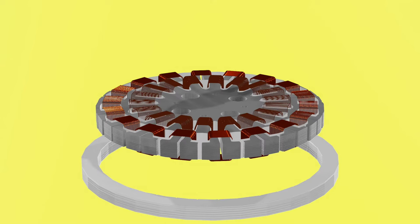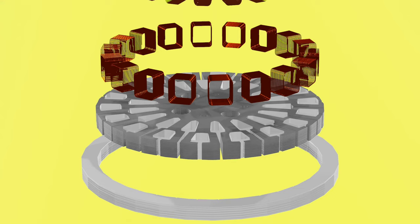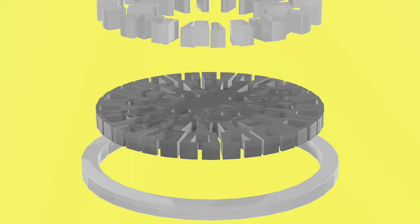On this stator core, there are two windings, starting winding and running winding. Windings are wound on stator core, and to prevent earthing, insulated paper is used.